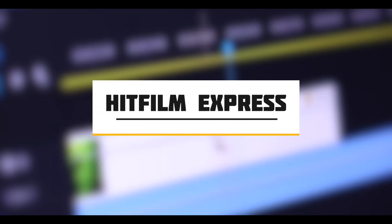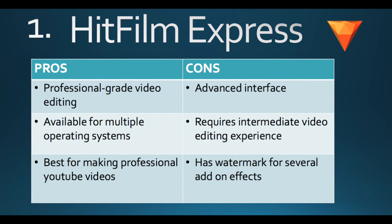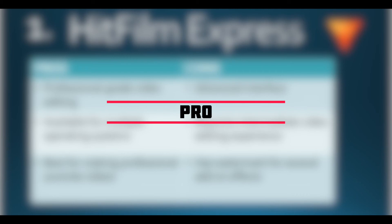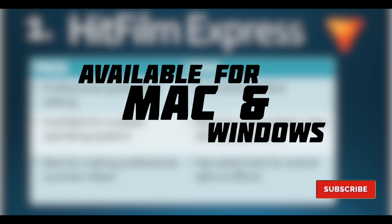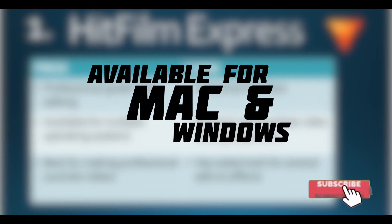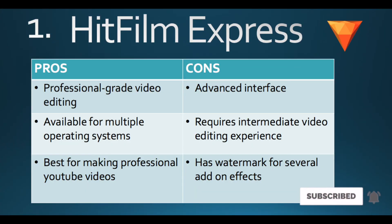The first software in this list is HitFilm Express. The software is free and is a professional-grade editing software. It has two versions — free and pro — but the free version already consists of the main features. It is available for Mac and Windows. Overall, it is a professional-grade video editing software.